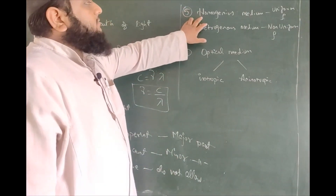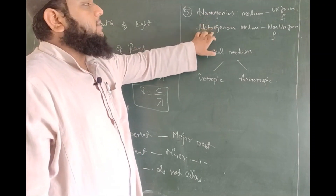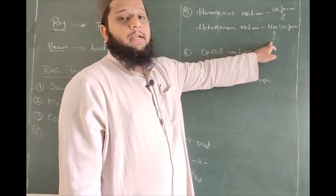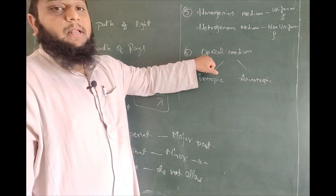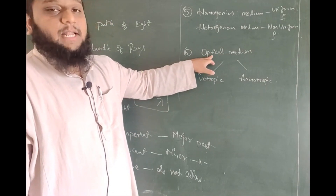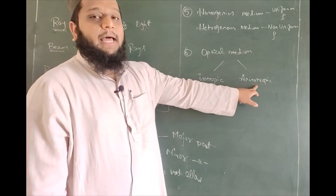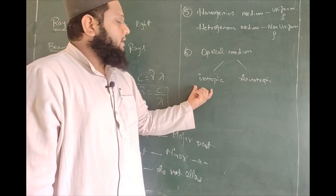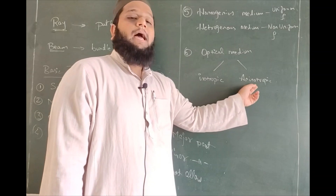Coming to another classification of medium: homogeneous and heterogeneous. Homogeneous medium has uniform density; heterogeneous medium has non-uniform density. Coming to optical medium — a medium which allows light to pass through is called an optical medium. Under optical medium you have two types: isotropic, where the speed of light is the same in all directions of the medium, and anisotropic, where the speed of light is different in different directions.